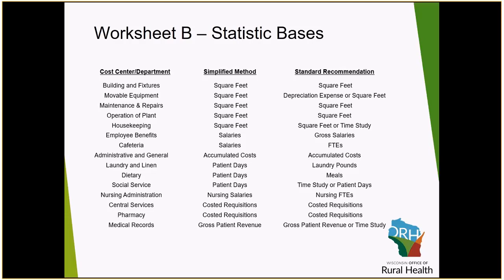If you are utilizing patient days for laundry, dietary, or social services, we recommend that you agree the patient days back to your annual records, tied back to the information utilized to input S-3 Part 1, and that this also excludes any nursery days. If you are using costed requisitions for central services and pharmacy, we recommend that this tie back to your internal records. For gross patient service revenue or a time study, evaluate whether professional revenue is included, as it is not included within Worksheet C, but must be considered when allocating revenue for medical records.